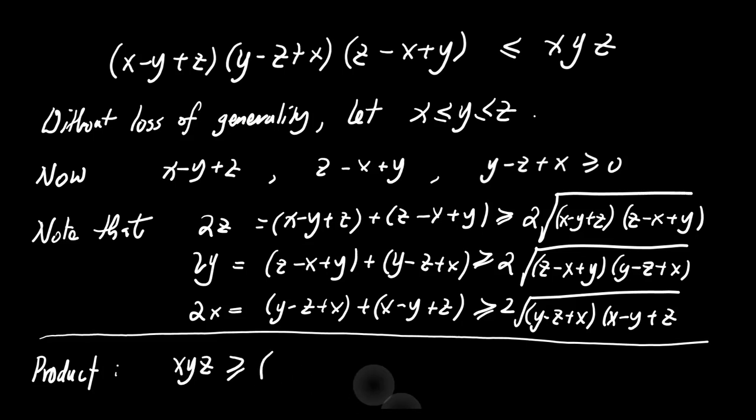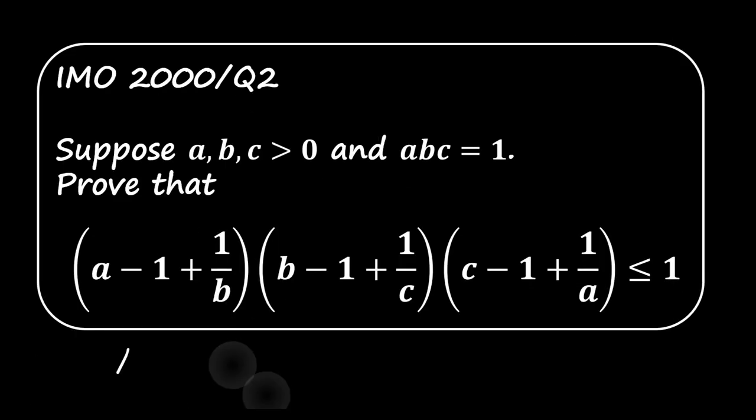By applying AM-GM to all pairs, we end up with the inequality that the product of these three terms is less than or equal to x times y times z. This proves that the original expression is less than or equal to 1.